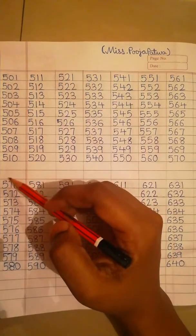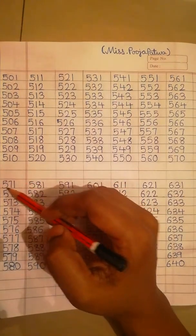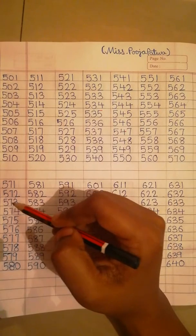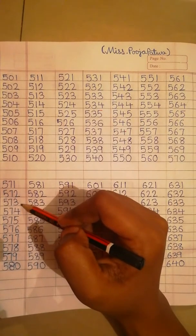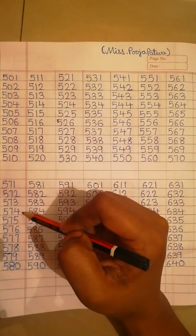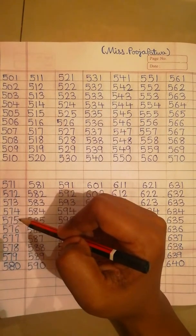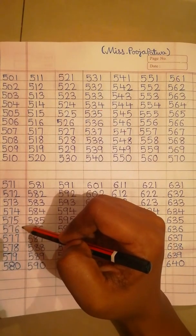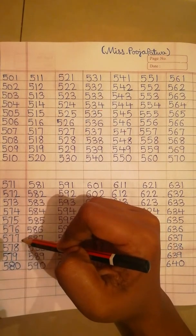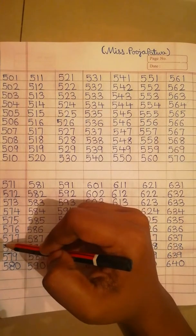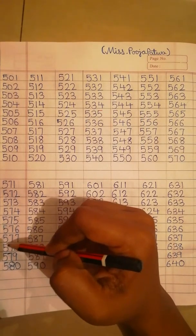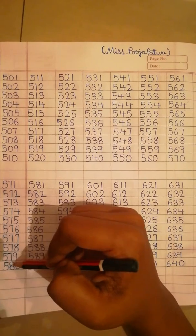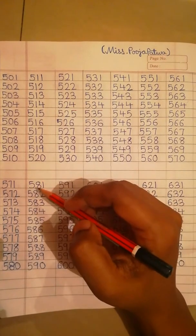Now next line: 571, 572, 573, 574, 575, 576, 577, 578, 579, 580. Next line.